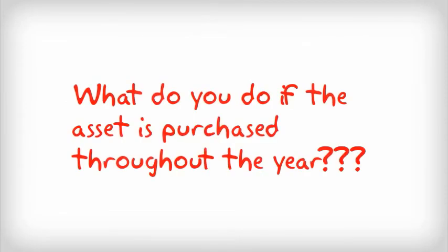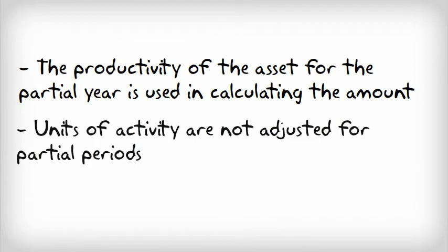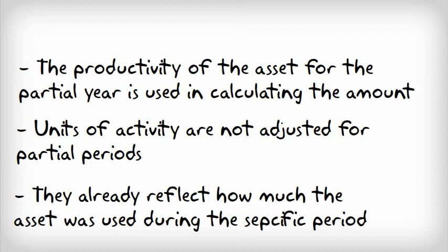I'm sure a lot of you are wondering, what do you do if the asset is purchased throughout the year? Well, it's actually very easy to apply when assets are purchased during the year. The productivity of the asset for the partial year is used in calculating the amount. Units of activity are not adjusted for partial periods, as they already reflect how much of the asset was used during the specific period.